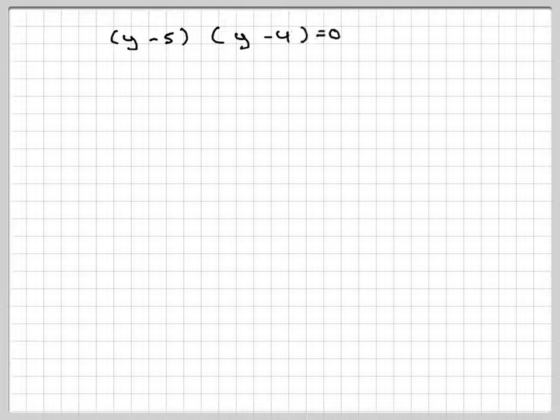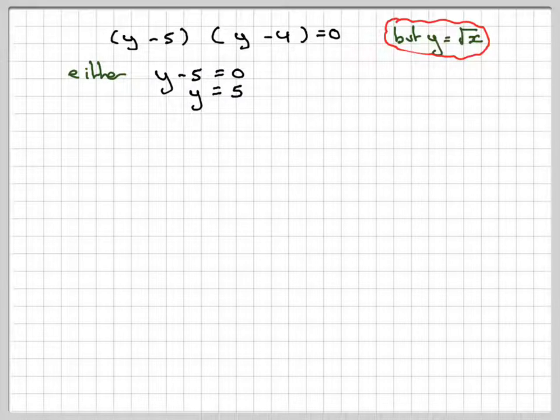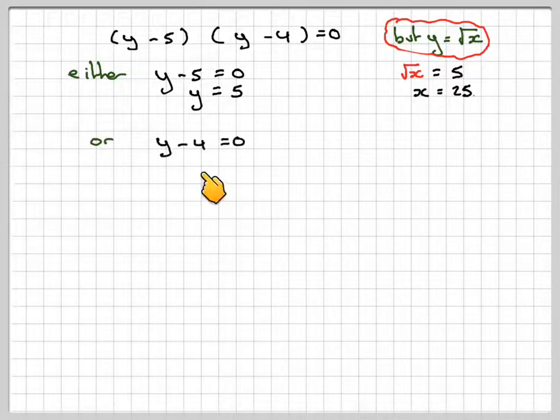So writing down our factorized disguise quadratic, we're going to say that either y minus 5 is equal to 0. Therefore, y is equal to 5. But y was equal to the square root of x. So therefore, we can say the square root of x is equal to 5. To find x, we need to square it. So we say that x is equal to 25.